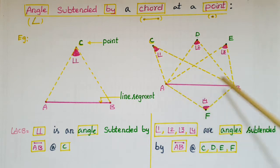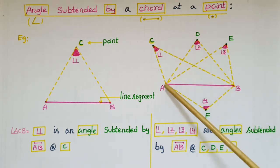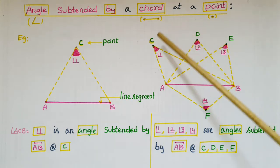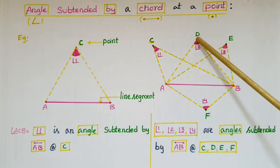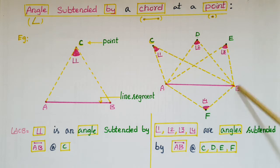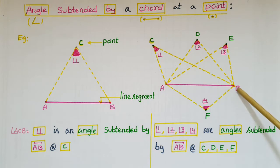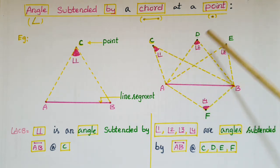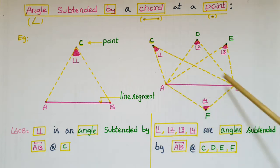Now see this figure — AB is a line segment and C, D, E, F are points. Angle 1 is the angle subtended by line segment AB at point C. Angle 2 is the angle subtended by AB at D. Angle 3 is the angle subtended by AB at E. Angle 4 is the angle subtended by AB at F. So angles 1, 2, 3, and 4 are all angles subtended by line segment AB at points C, D, E, and F.